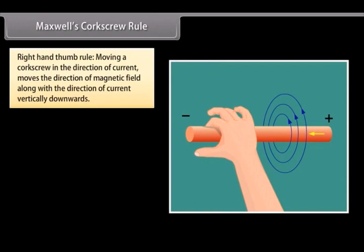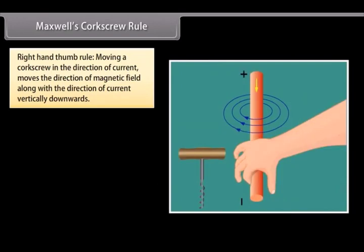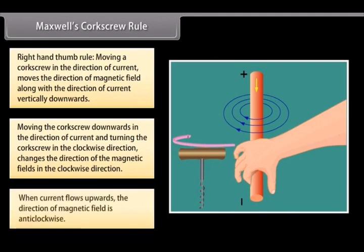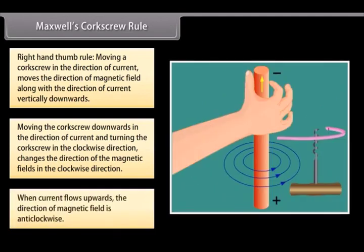Maxwell's Corkscrew Rule, also known as Right-Hand Thumb Rule, defines that moving a corkscrew in the direction of current moves the direction of magnetic field along with the direction of current vertically downwards. If we move the corkscrew downwards in the direction of current and the handle of corkscrew is turned in the clockwise direction, then the direction of the magnetic fields is in the clockwise direction. So, when current flows upwards, the direction of magnetic field changes and is anti-clockwise.